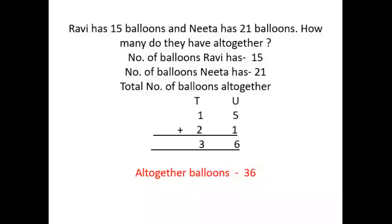First we will write units and tens. First number is 15: 1 ten, 5 units. Second number is 21: 2 tens, 1 unit. See the units side: smaller number 1 finger, mind 5. After 5 plus 1 is 6. Write 6. Come to the tens side: finger 1, mind 2. After 2 plus 1 is 3. So 3 tens, 6 units — total 36 balloons altogether.